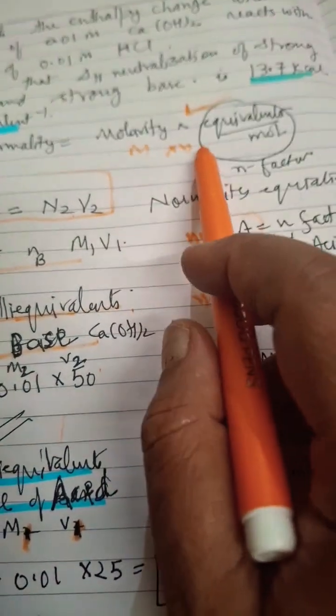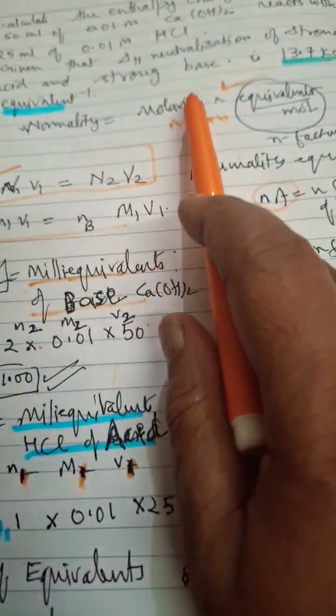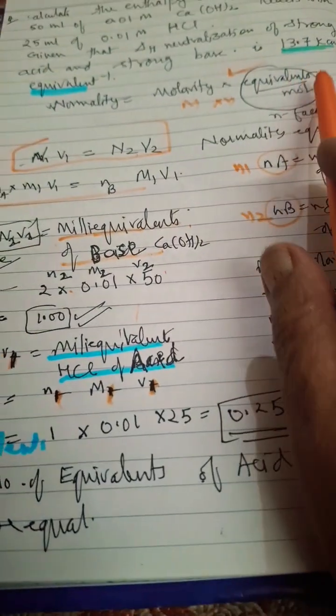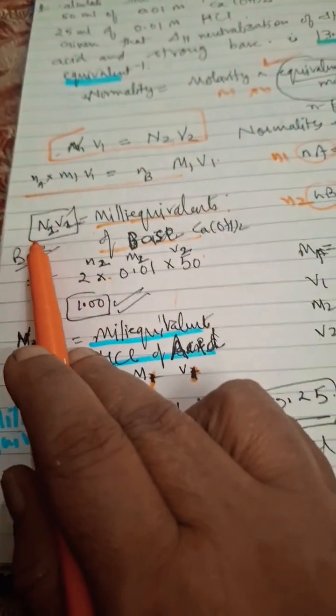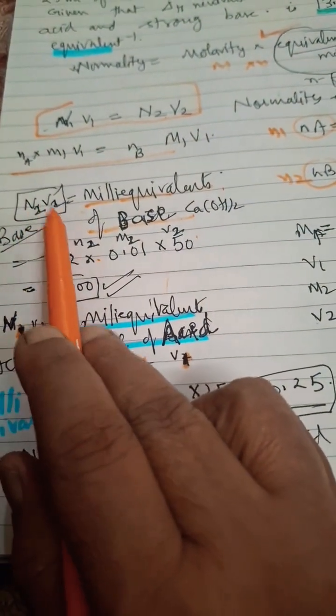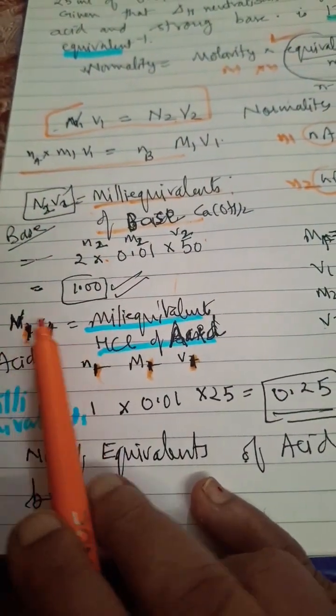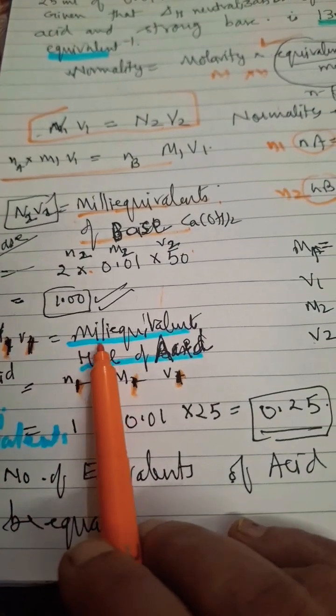Equivalence per mole is known as n-factor, so normality = molarity × n-factor. Mole will be cancelled out and we will get equivalence. That is why when N2 and V2 or N1 and V1 are multiplied, we call it milliequivalents.